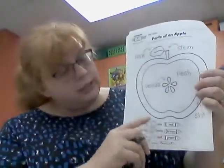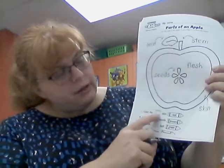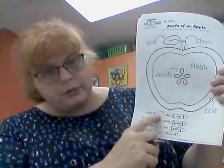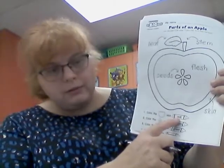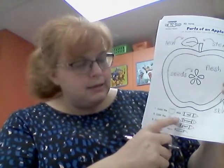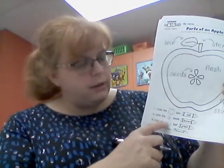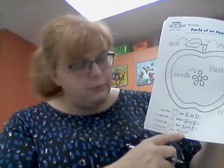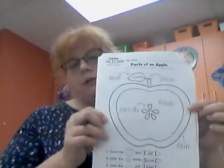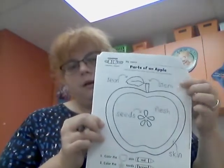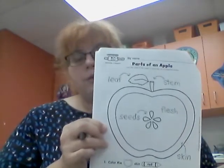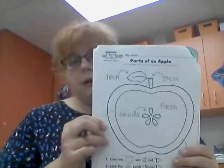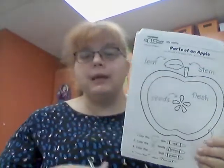Then what you're going to do is look at each of the colors. It says color the skin, so there's the picture of it and then the word red — so you're going to color the skin red. Then it says color the seeds brown. Color the leaf green. Color the stem brown. So you're going to color the parts of the apple. Make sure that you're saying them as you're coloring them. So as they color the leaf green, I'm going to say leaf — L-E-A-F.